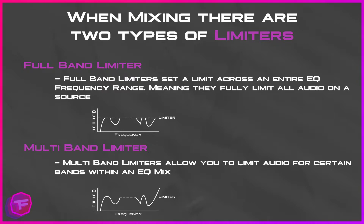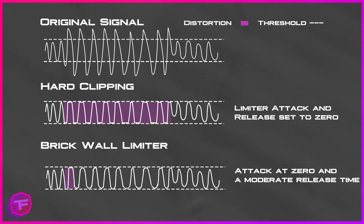A multi-band limiter has several frequency bands at your disposal, giving you the option to adjust or limit specific frequency ranges. As you can see on the screen, the full-band is limiting the entire frequency range whereas the multi-band is only limiting a section within that frequency spectrum. The multi-band limiter can be used strategically to get the EQ mix exactly how you want it — for example, targeting bleeding in the high end of a song.